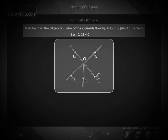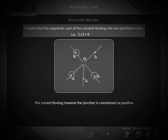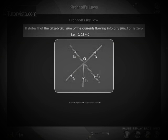To take their algebraic sum, we assume the sign convention: the current flowing towards the junction is considered as positive, the current flowing away from the junction is considered as negative.